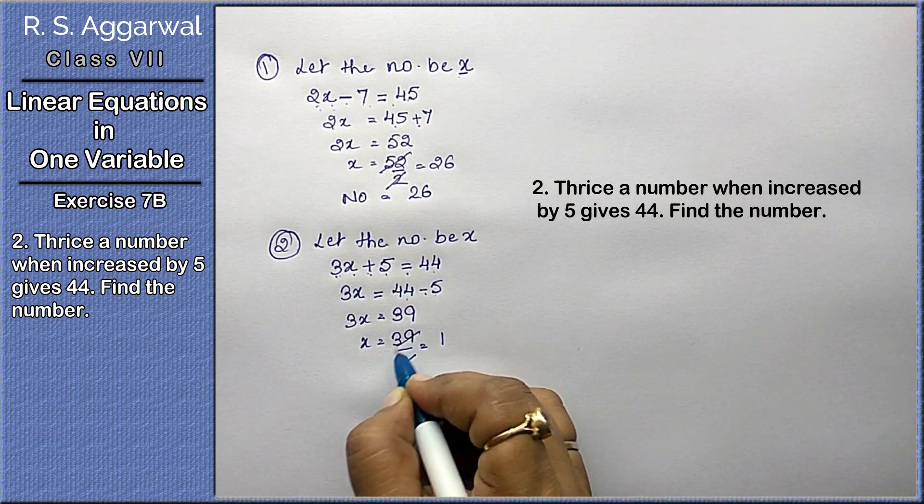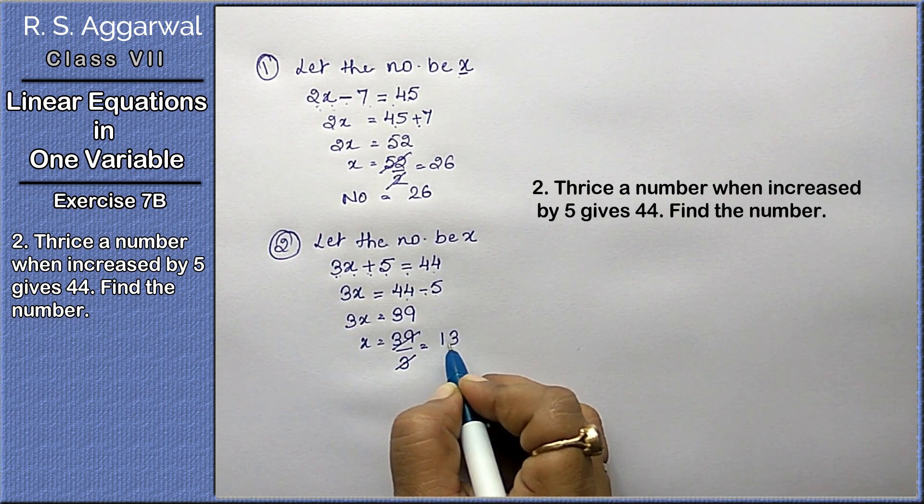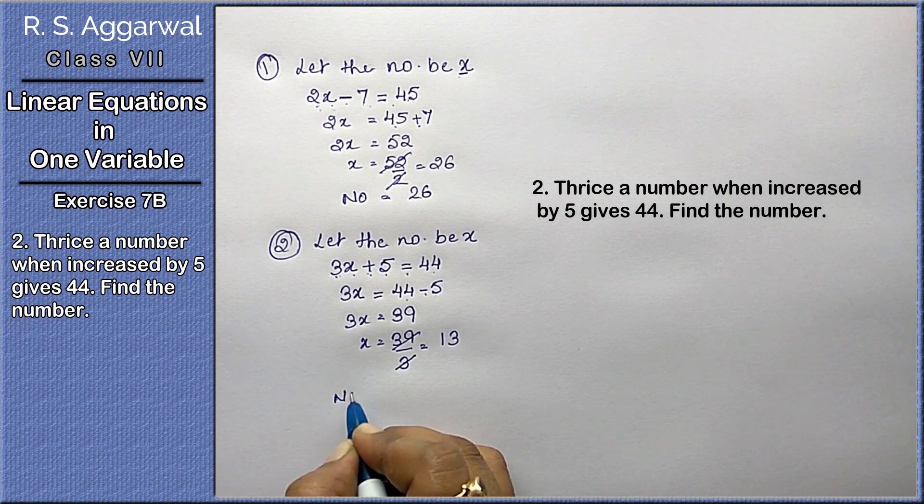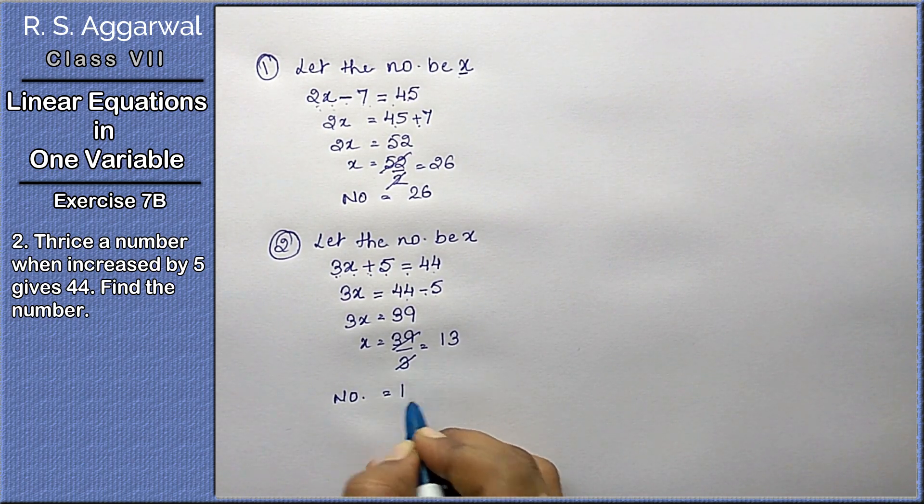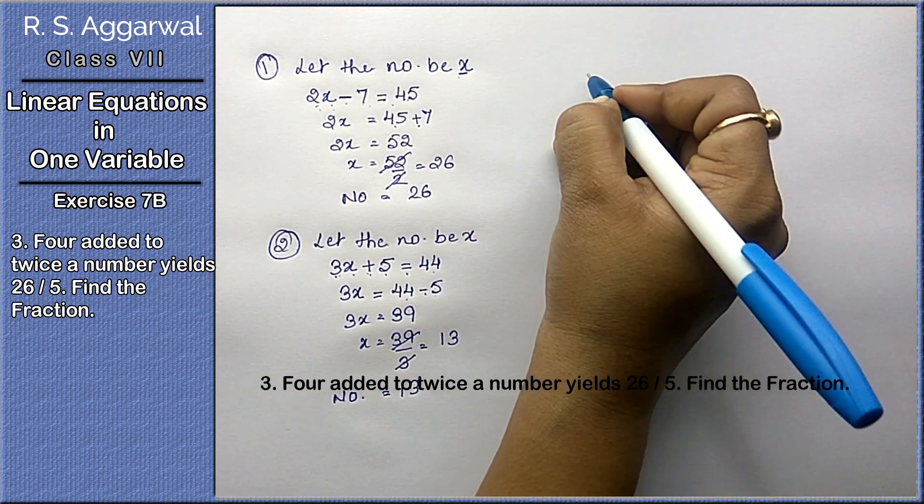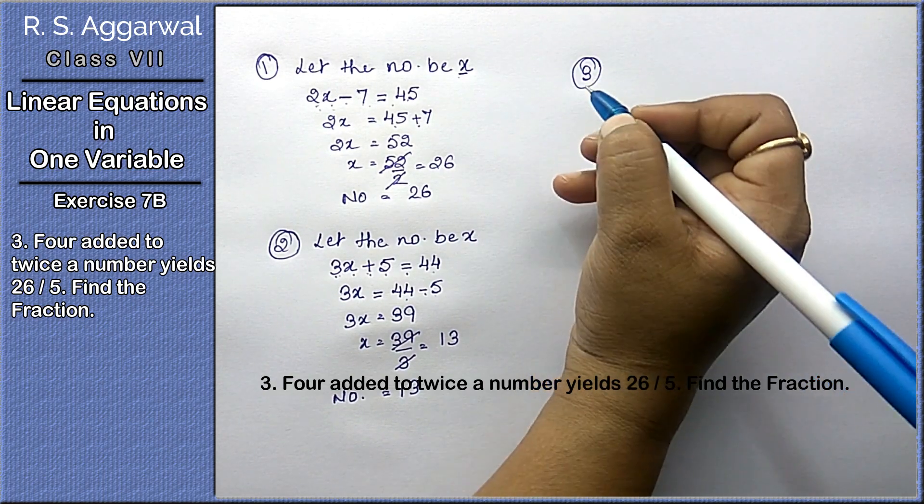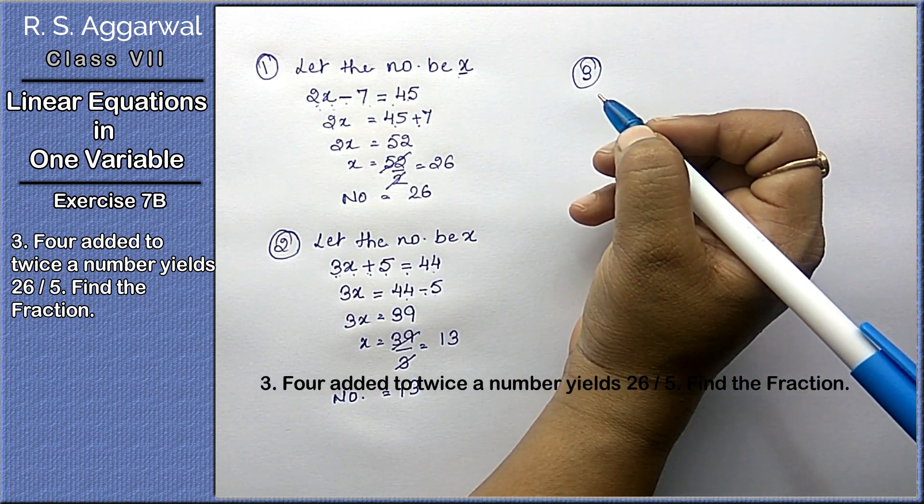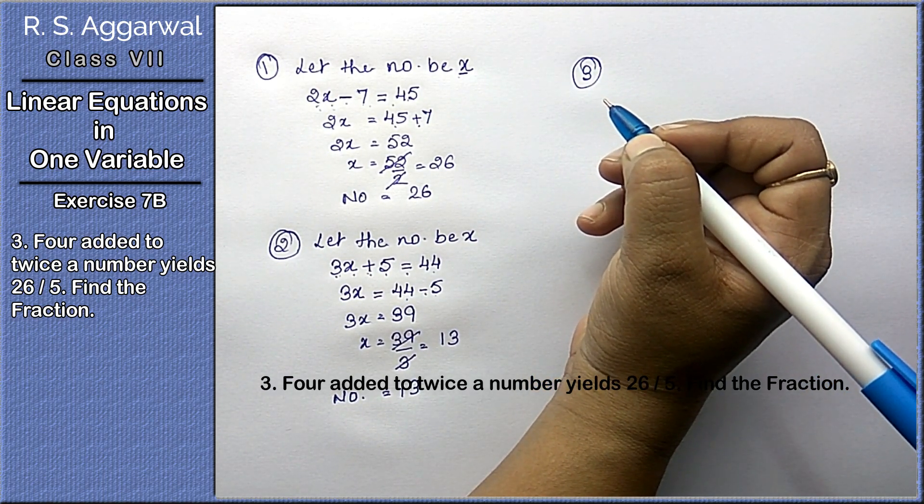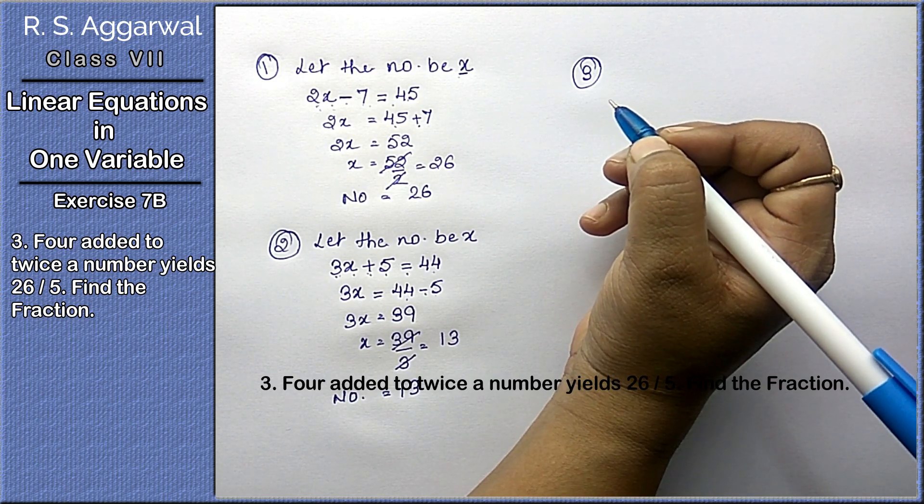This plus becomes minus. 3x equals 44 minus 5 is 39. Then x equals 39 upon 3, which is 13. Hence the number is 13.